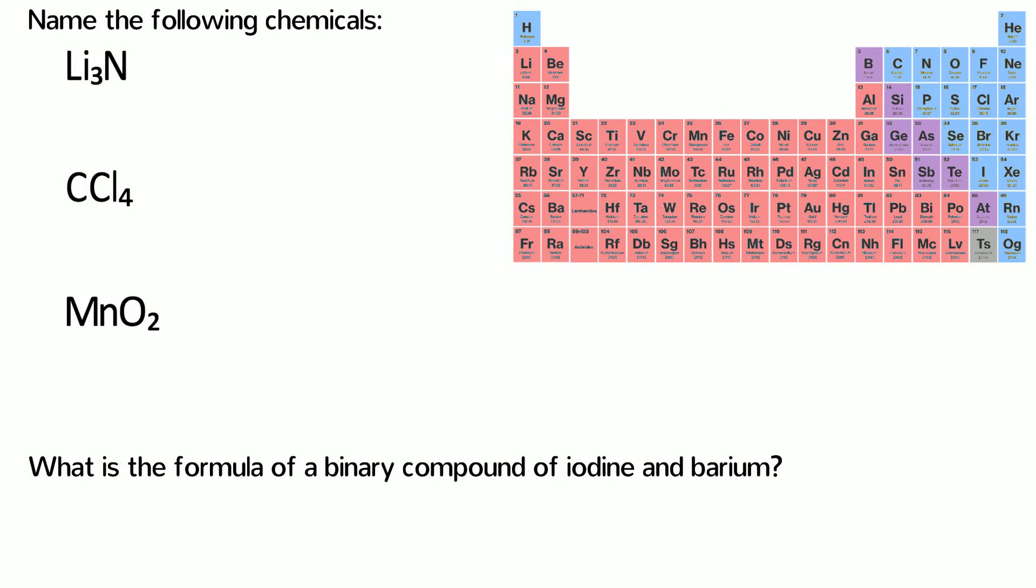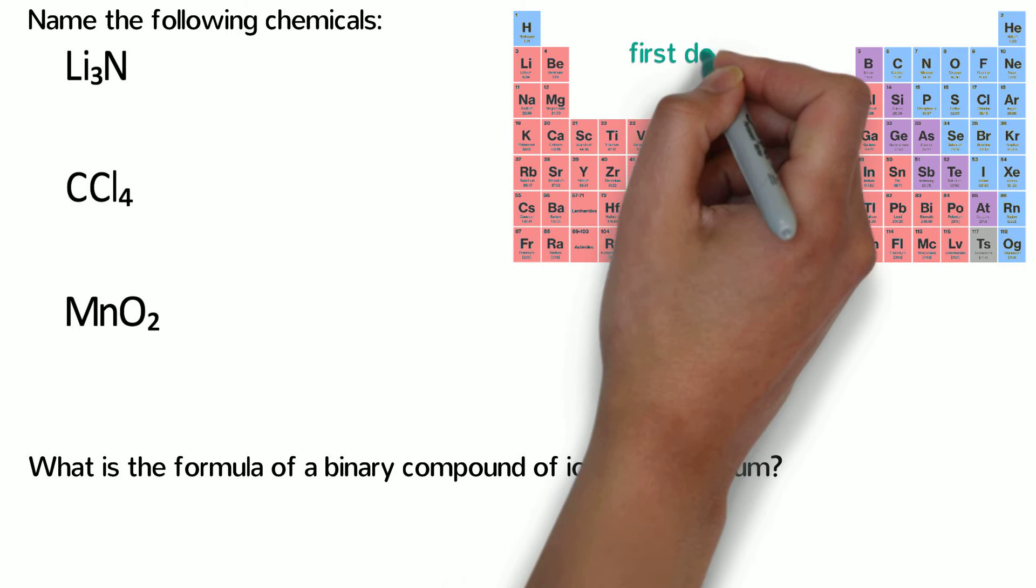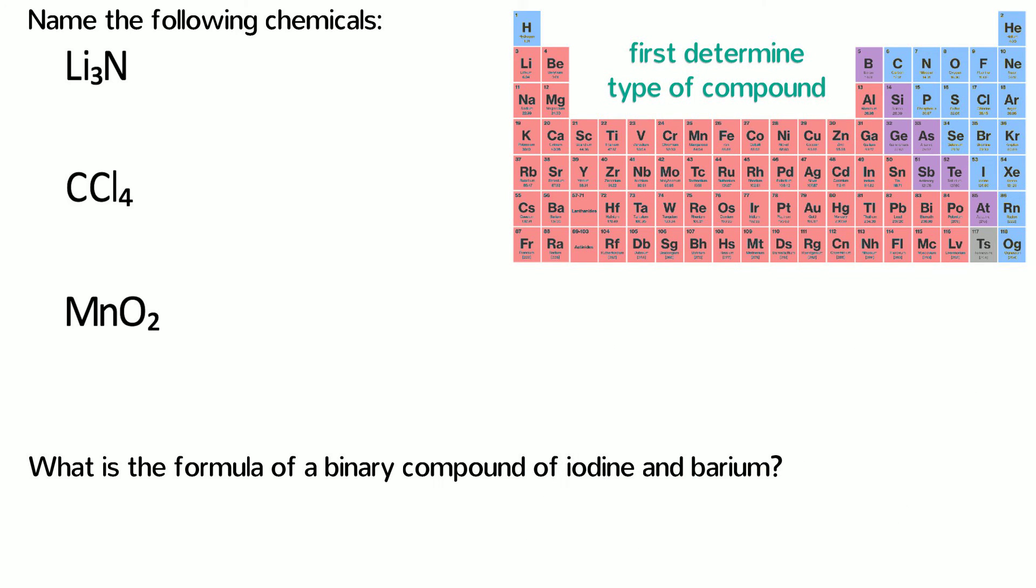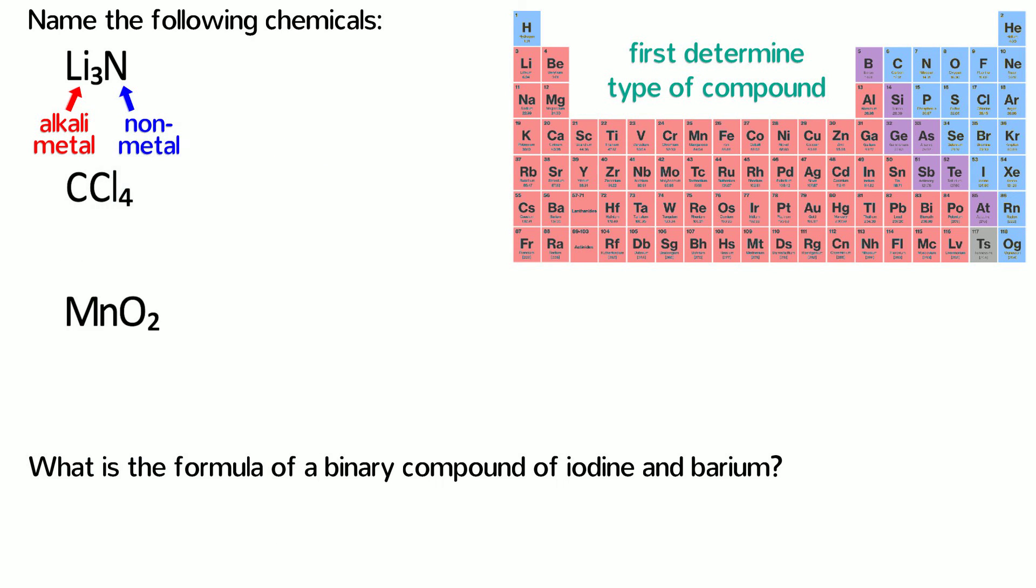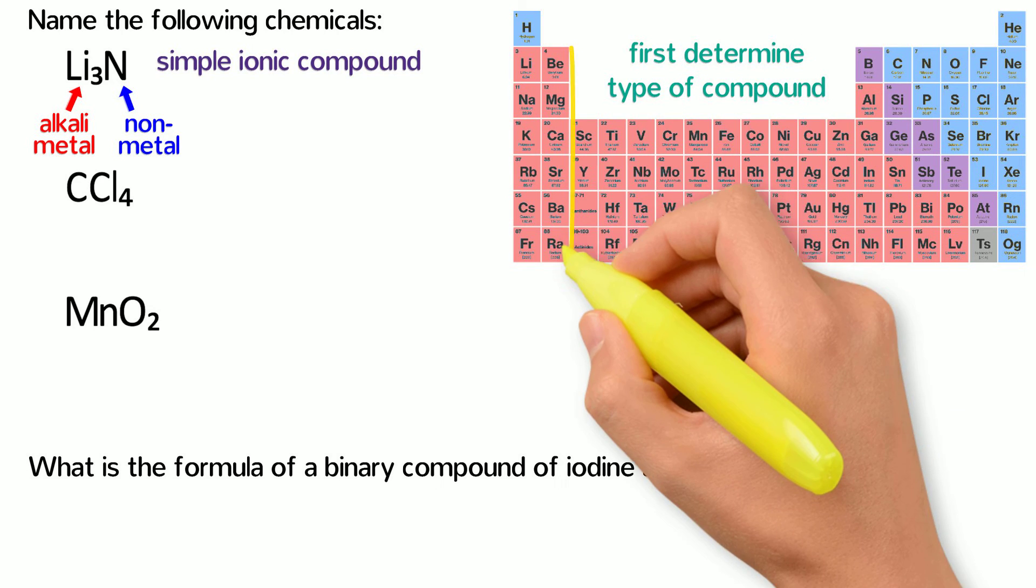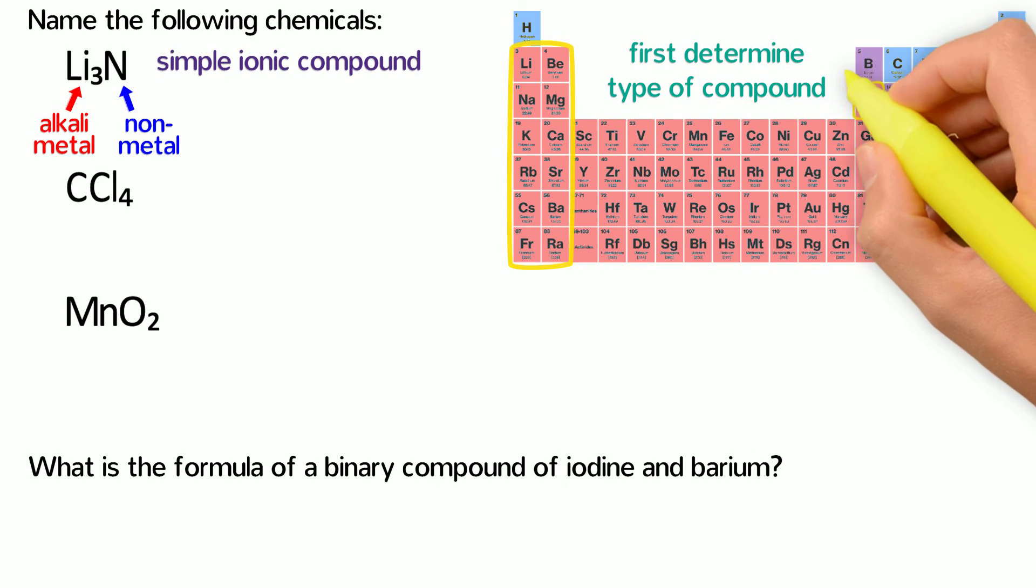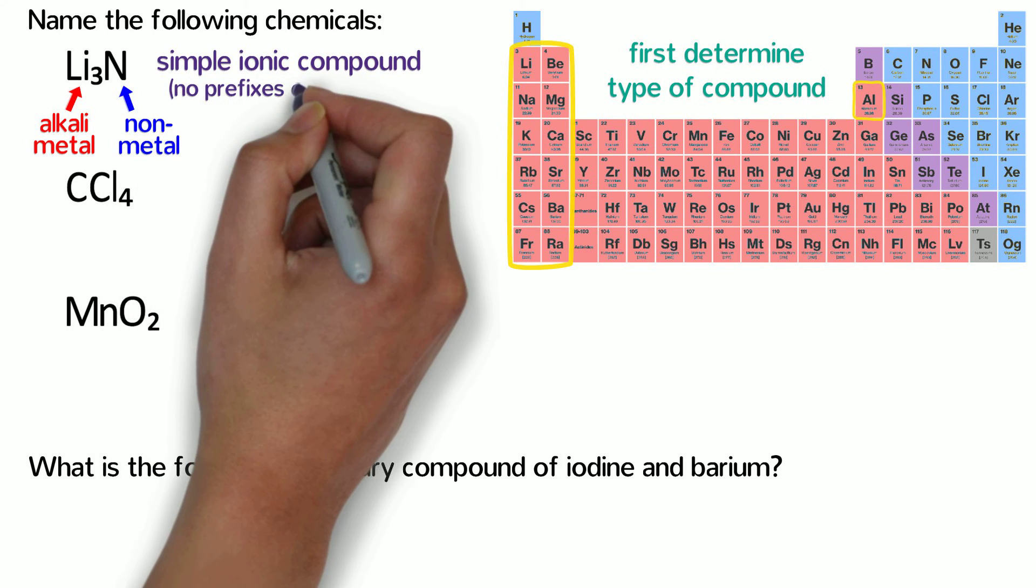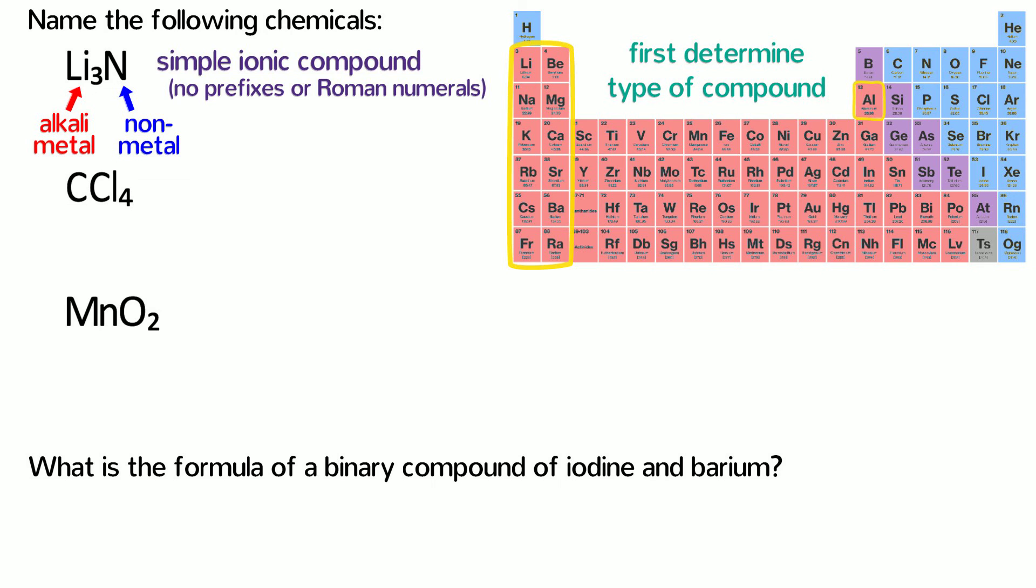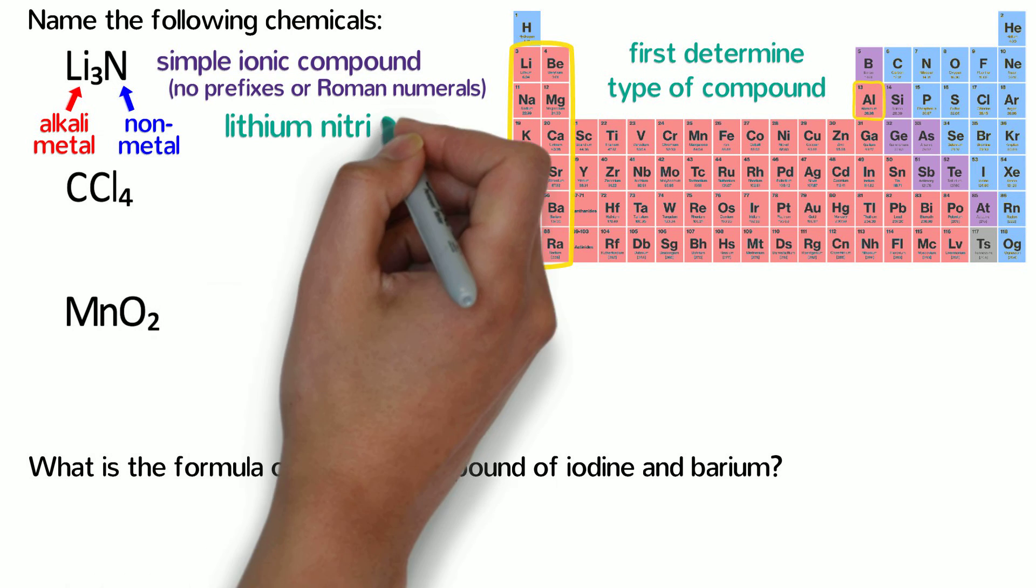Alright, now for the answers. Before you begin, you first need to determine what type of compound each one is. The first compound is an alkali metal and a nonmetal, so it's a simple ionic compound that obeys the octet rule. Keep in mind that the metals which obey the octet rule are primarily in the first two columns and aluminum. Nearly all the other metals are multivalent. Since Li3N is a simple ionic compound that obeys the octet rule, it should not have any prefixes or Roman numerals. Its name is simply lithium nitride.